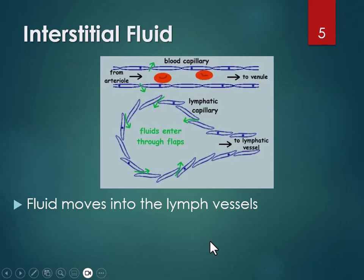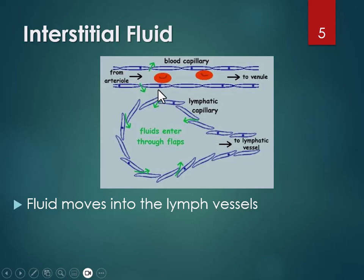Lymph fluid is clear — it looks like plasma without blood cells, because it doesn't have red blood cells in it. It's a clear yellowish fluid that's the same as interstitial fluid. You've probably seen it if you've had a blister filled with pus — the clear liquid part is like lymph fluid. When blood moves through the capillaries, some of it gets pushed out because of blood pressure, and not all of it gets back into the capillary. Some enters the lymph system passively — as pressure builds up, it slips through these flaps and into the lymph vessel.